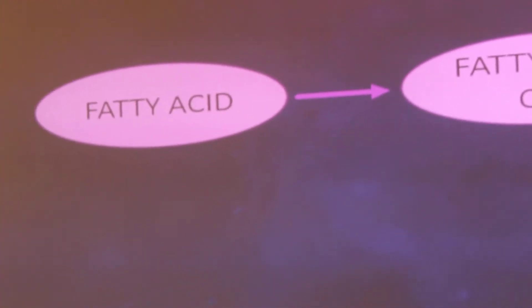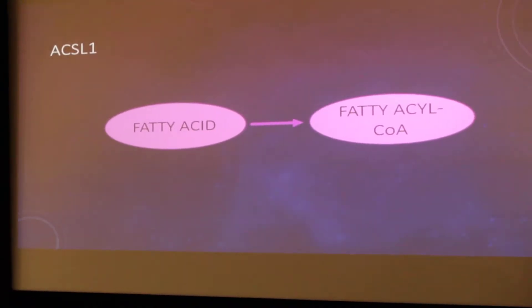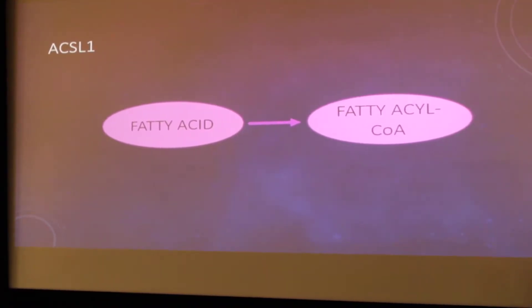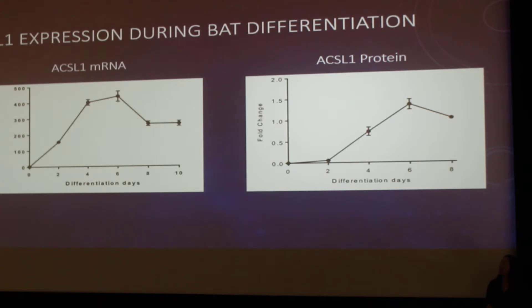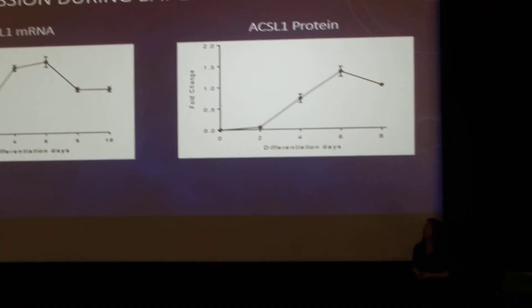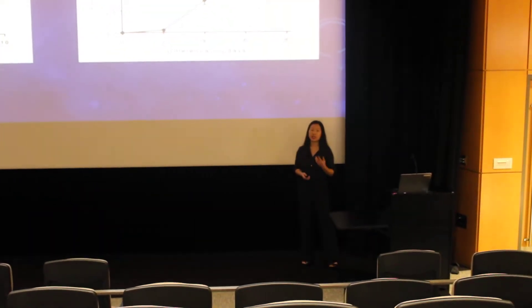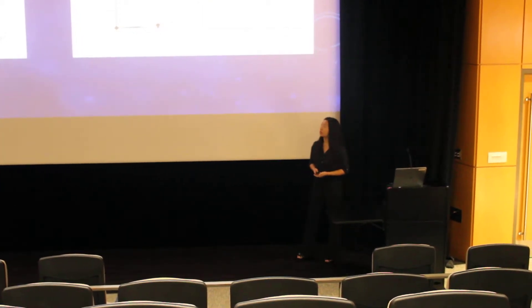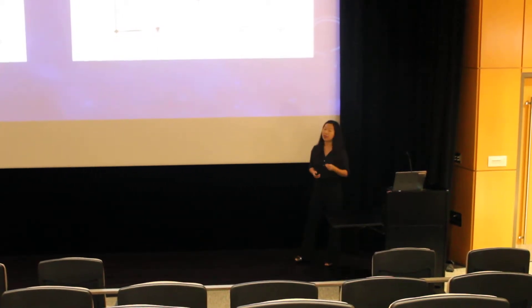This brings us to the gene of interest in my research: ACSL1. ACSL1 is an enzyme that controls the fate of fatty acids in our bodies — whether they are stored as energy or used. In our lab, it has already been found that during brown adipose tissue differentiation, there are increased levels of ACSL1 gene expression. Since brown adipose is desirable because it allows us to use energy more easily, this shows that ACSL1 has an important regulatory role in creating brown adipose tissue.